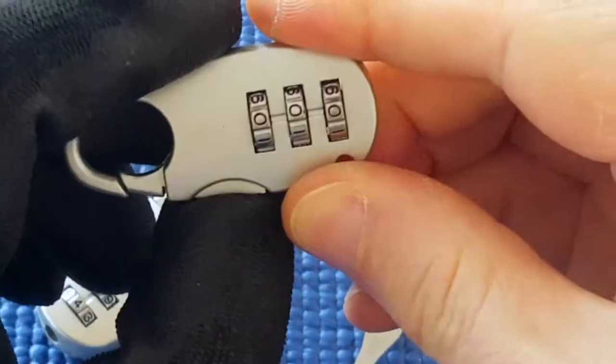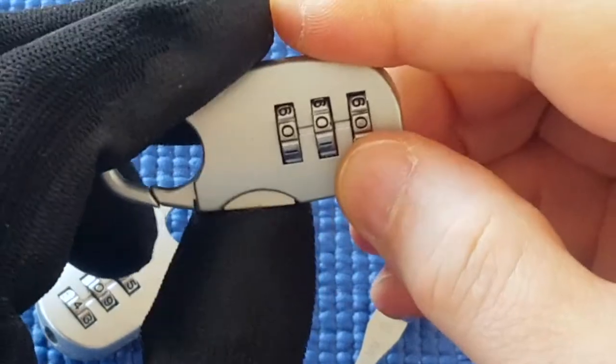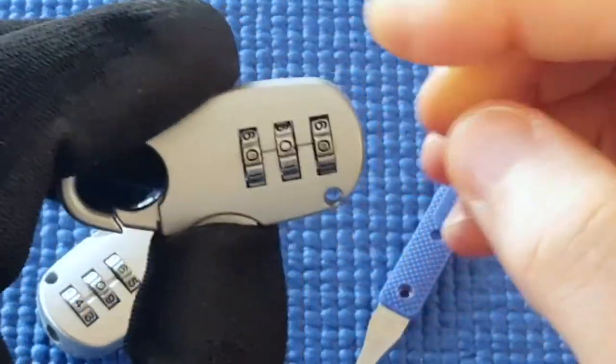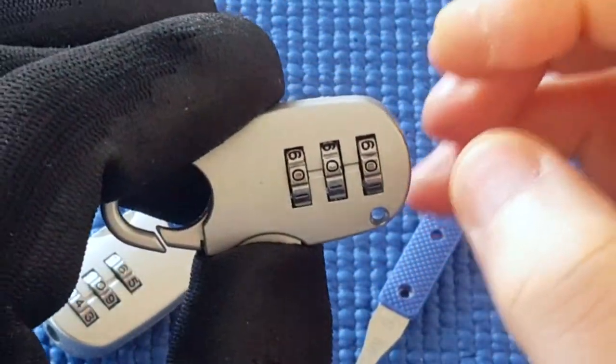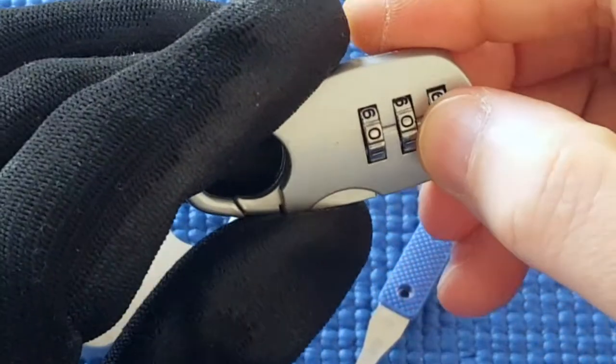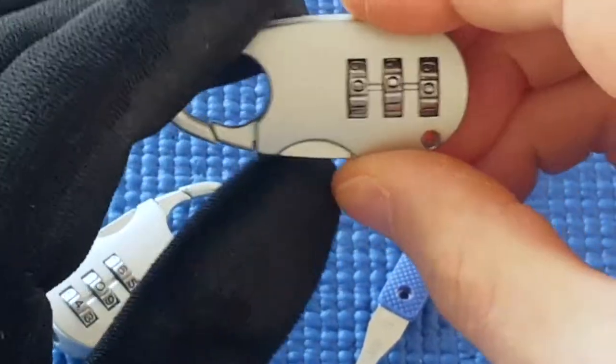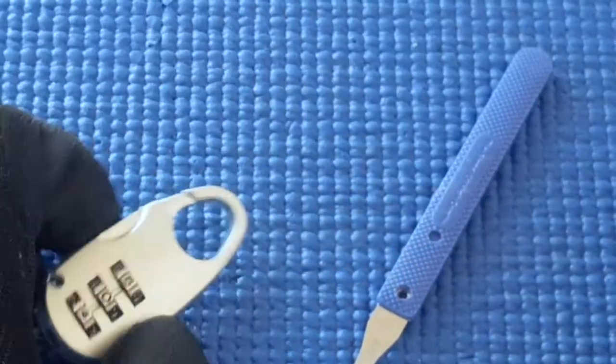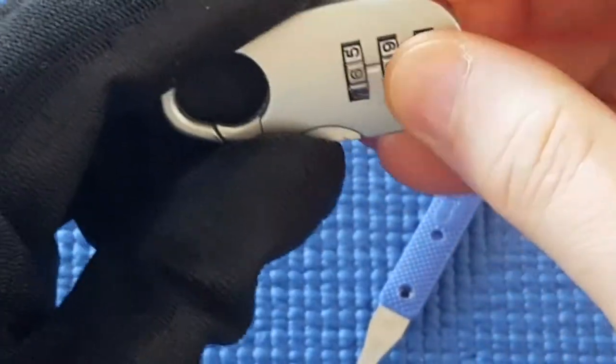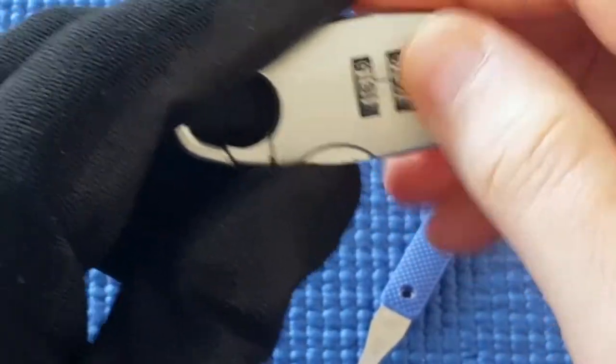Okay, so all zeros is not the correct number. Now, as I found with the first lock, and I should mention this. I'll just pick up the first lock for a second. When I turn the wheel, it turns freely.